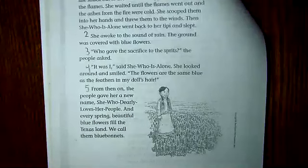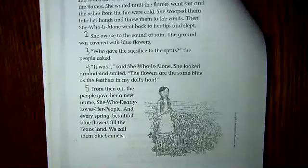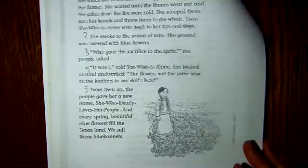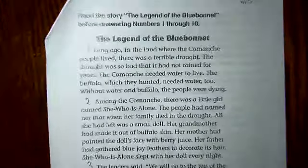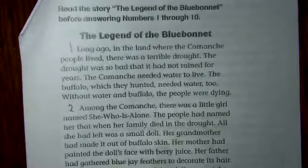Make observations about what you see. I see a girl — she's got hair in two braids, she's wearing some sort of dress or skirt, she's standing in a field, and there's something on the ground that doesn't look like just grass — it looks like some sort of plant. Based on those observations, go ahead and make predictions about what you think 'Legend of the Blue Bonnet' is going to be about.